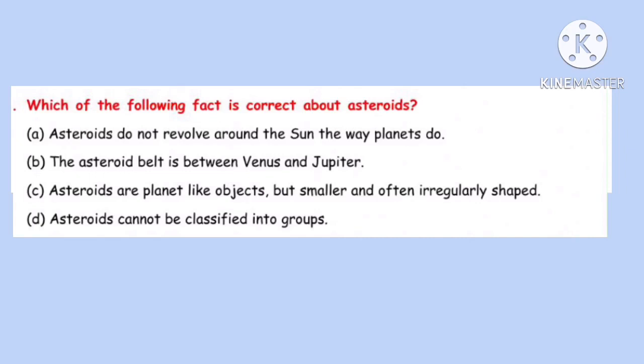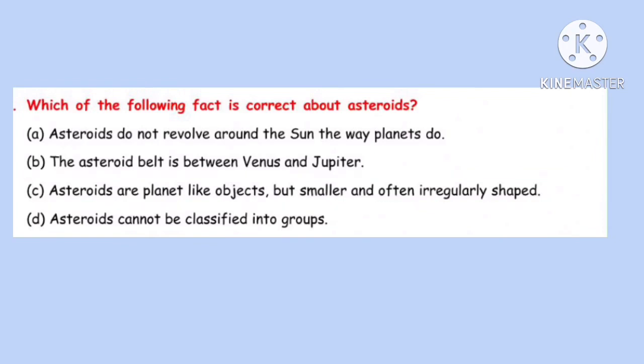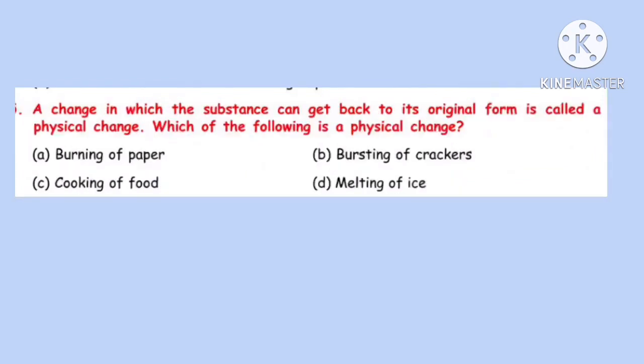Question 24. Which of the following fact is correct about asteroids? Option C: Asteroids are planet-like objects but smaller and often irregularly shaped.